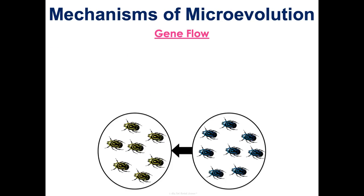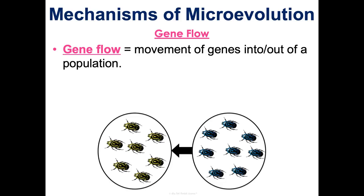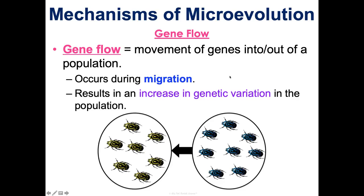Another thing that drives microevolution is gene flow — the movement of genes into and out of a population. It occurs during migration and basically means moving and reproducing. There has to be an exchanging of genetic information for this to have an impact on evolution. It causes an increase in genetic variation in the population over time. For example, if I live on an island with only yellow beetles, and I take a boat to a nearby island that has all blue beetles, blue beetles might migrate onto my boat and then onto my island where they start reproducing with the yellow beetles — that's migration and gene flow introducing new traits.